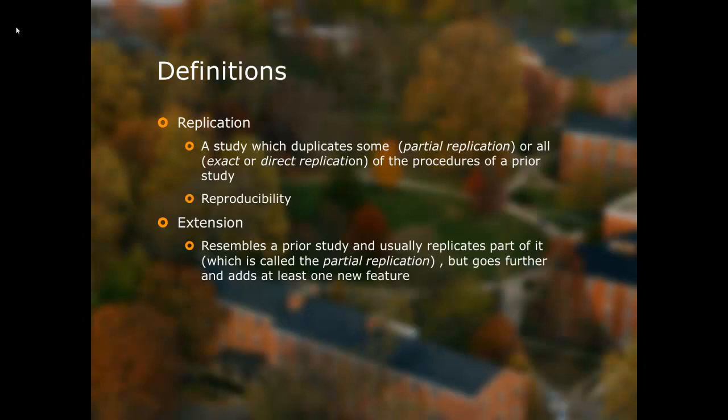The reason why we do replications, especially exact or direct replications, is the idea of reproducibility. That is, in science — not just psychology, but science in general — we believe that research should be reproducible. We should be able to do the same study and get the same results again. So that's one of the reasons why we do replications: reproducibility.